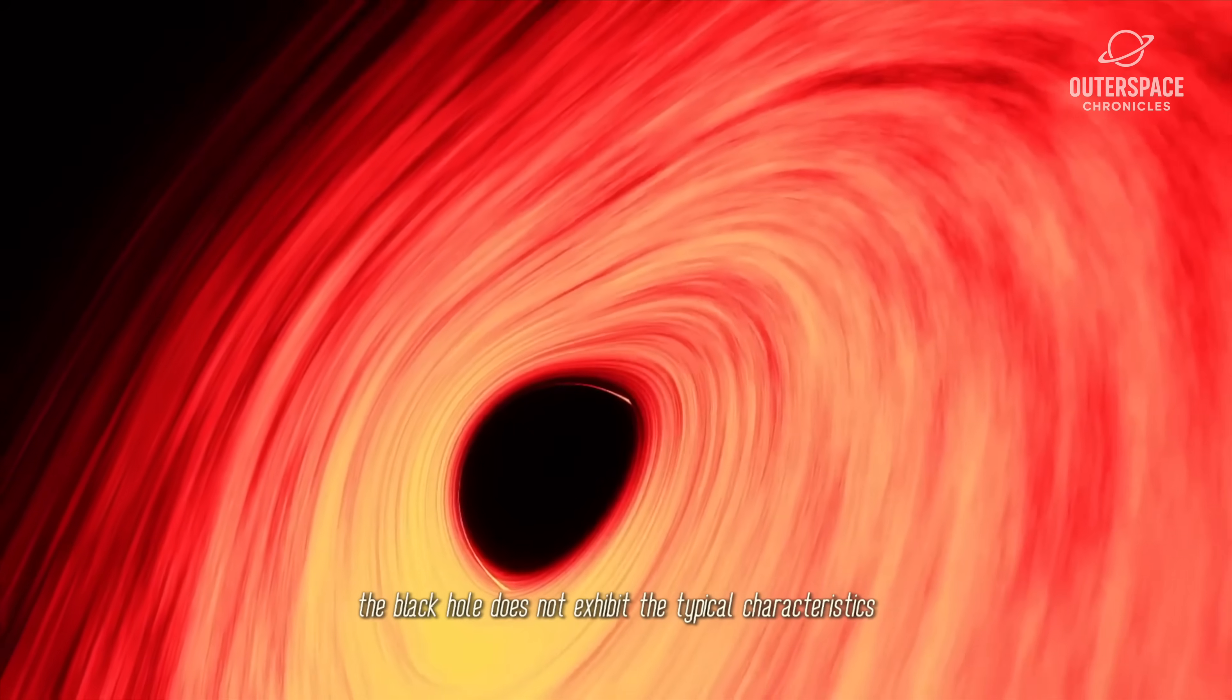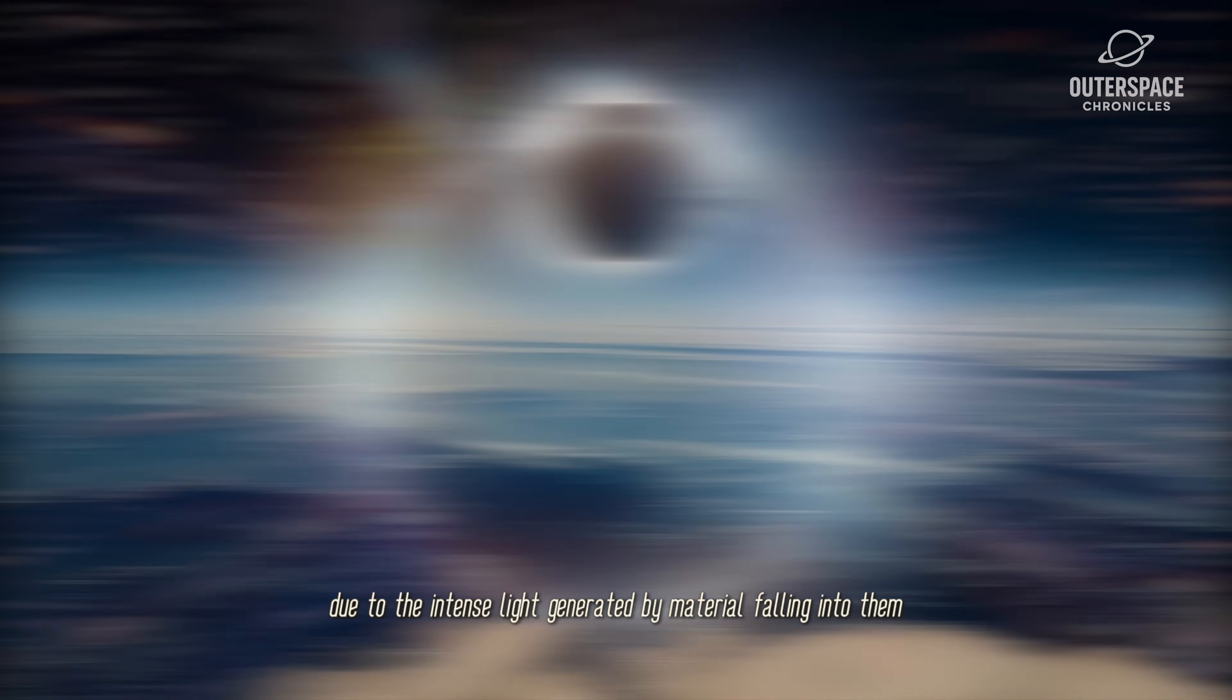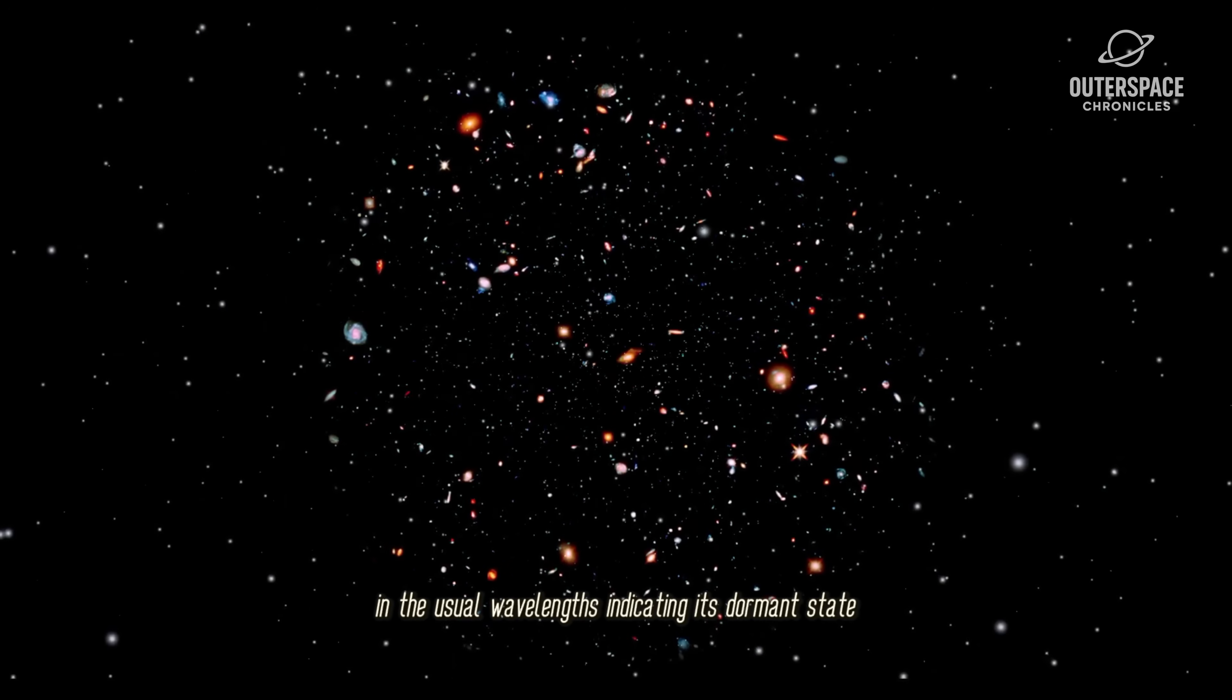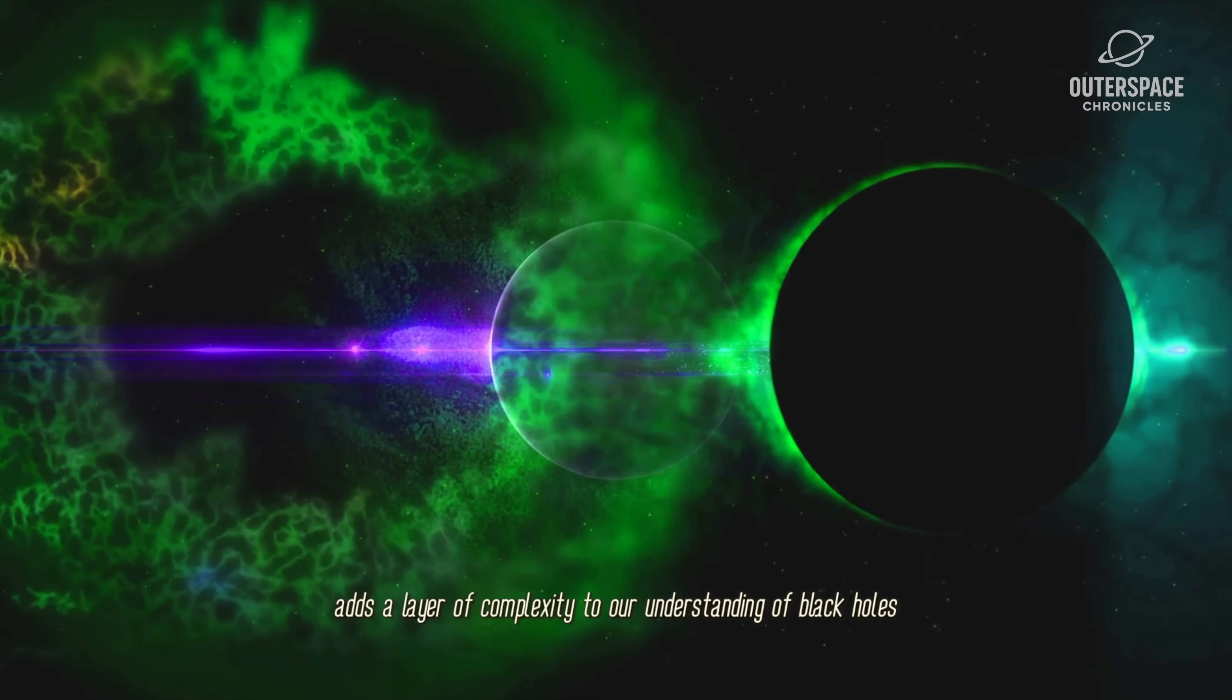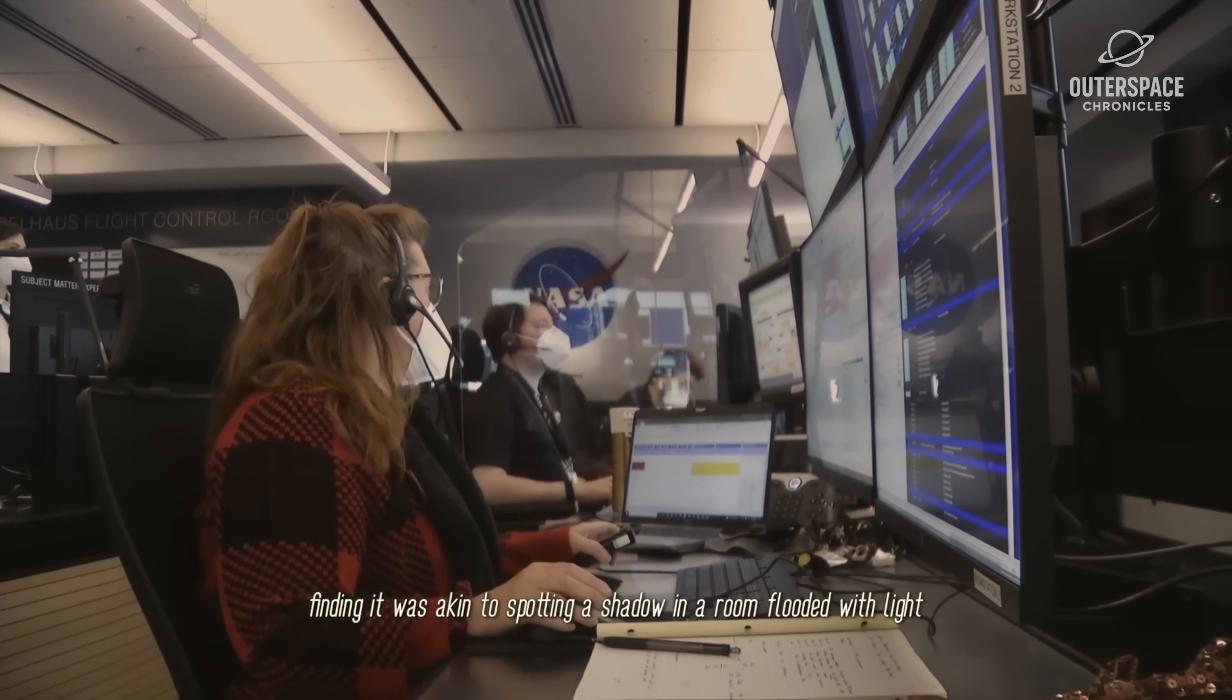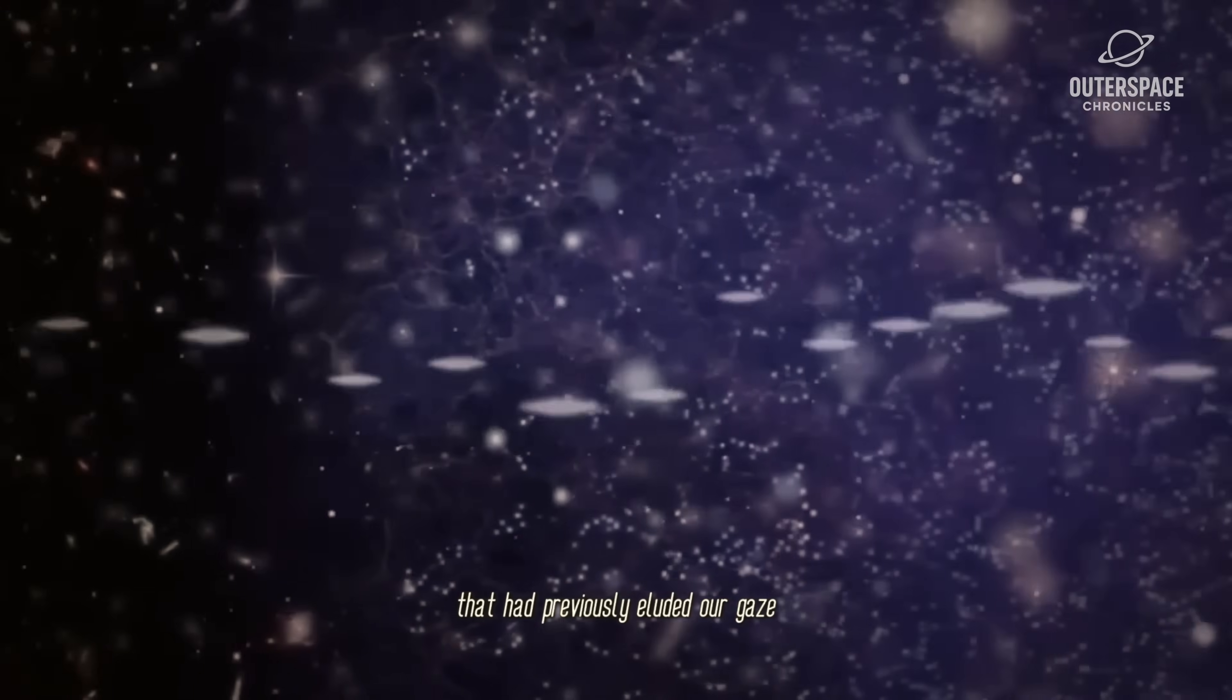Interestingly, the black hole does not exhibit the typical characteristics often associated with such entities. Unlike many black holes that are visible due to the intense light generated by material falling into them, this particular black hole remains undetectable in the usual wavelengths, indicating its dormant state. This absence of conventional signs adds a layer of complexity to our understanding of black holes and their roles in the universe. Finding it was akin to spotting a shadow in a room flooded with light, a remarkable testament to the Webb Telescope's precision in unveiling the concealed facets of the universe that had previously eluded our gaze.